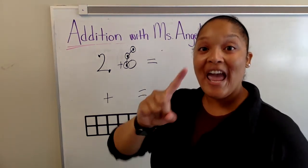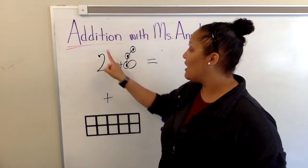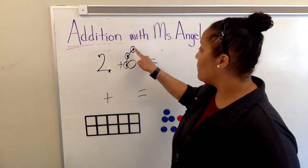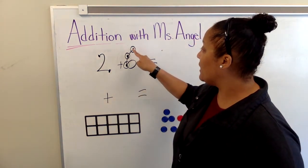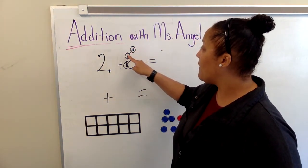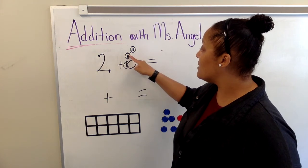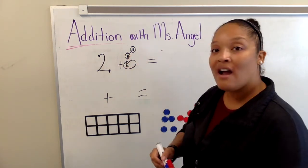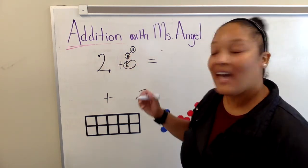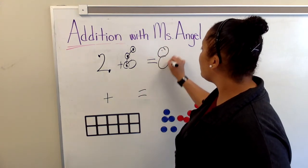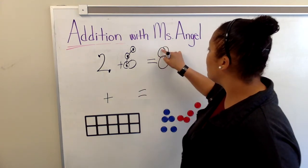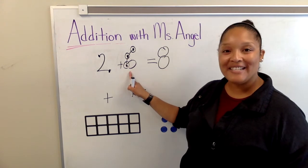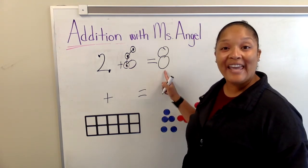Let's get our finger and count the dots: one, two, three, four, five, six, seven, eight. I counted eight. So two plus six equals eight.